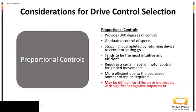Proportional joysticks give us 360 degrees of control — not only forward, left, right, and reverse, but all the diagonals and angles in between. As we're moving down a pathway and our course starts to veer, we naturally make subtle adjustments — just like on a steering wheel. Proportional controls make driving more efficient and tend to be more intuitive for the individual.